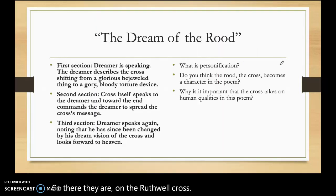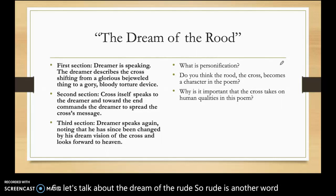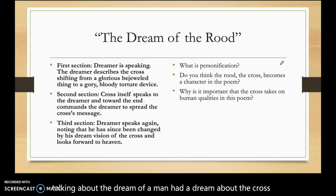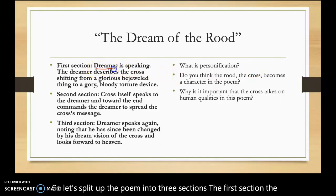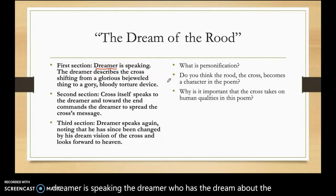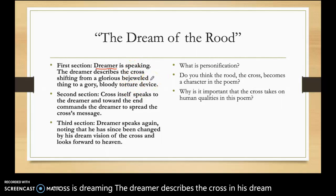Let's talk about the Dream of the Rood. Rood is another word for cross. So when we talk about the Dream of the Rood, we're talking about a dream a man had about the cross that Jesus was crucified on. Let's split up the poem into three sections. The first section, the dreamer is speaking, and the dreamer describes the cross in his dream, shifting from this beautiful, bejeweled, awesome thing to this ugly, terrible, bloody torture device.